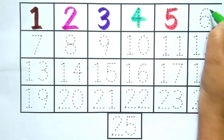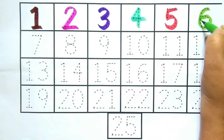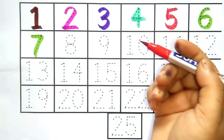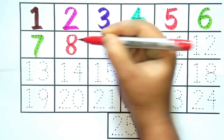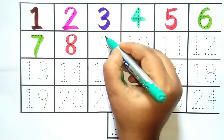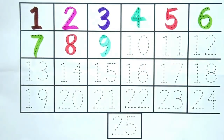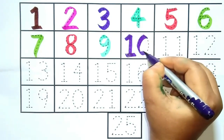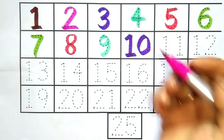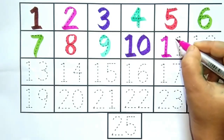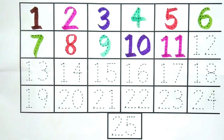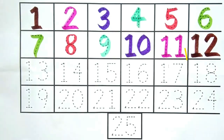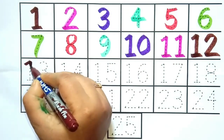Light green color, it is number 6. Light green color, it is number 7. Red color, it is number 8. Green color, it is number 9. Purple color, it is number 7. Pink color, it is number 7. Green color, it is number 7.